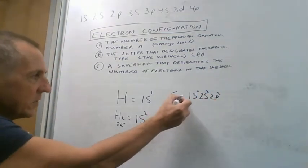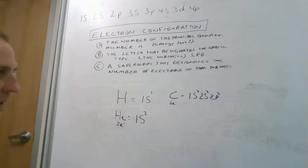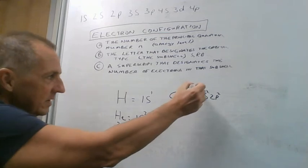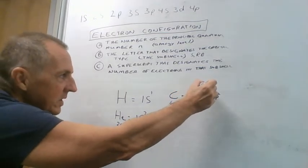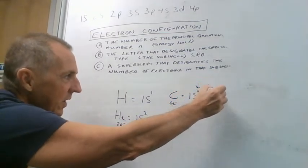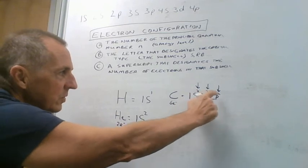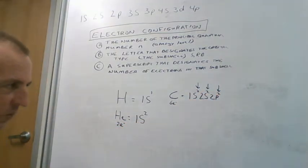So carbon's electronic configuration is 1s2, 2s2, 2p2. And this, the sum of these numbers here are all the electrons we've accounted for. So we have two, four, six electrons in their orbitals, and we started out with six electrons we had to put in orbitals. So all the electrons are in the appropriate lowest level orbital.